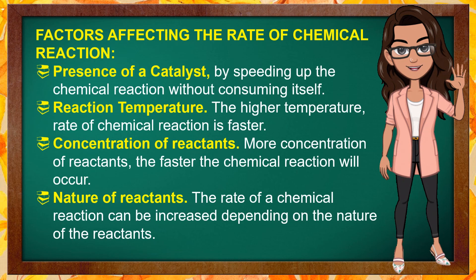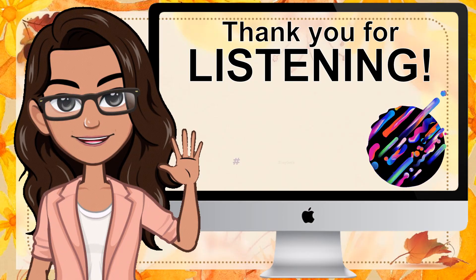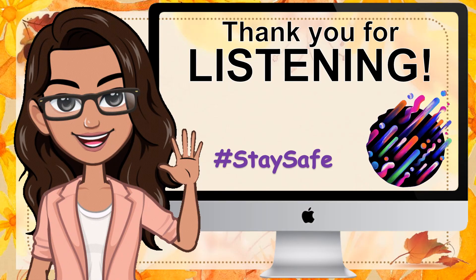To sum up our learnings today, the factors affecting the rate of chemical reaction are: the presence of a catalyst, by speeding up the chemical reaction without consuming itself; reaction temperature — the higher the temperature, the rate of chemical reaction is faster; concentration of reactants — more concentration of reactants, the faster the chemical reaction will occur; and for the nature of reactants, the rate of a chemical reaction can be increased depending on the nature of the reactants. That's the end of our lesson today. It's been my pleasure teaching you one of the amazing topics of physical science and I really hope you learned something from this video lesson. Thank you and may God bless us all. Let's meet again in our next video.